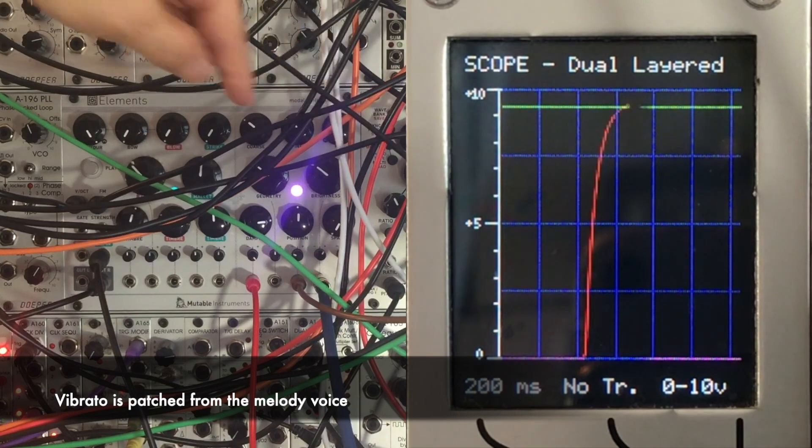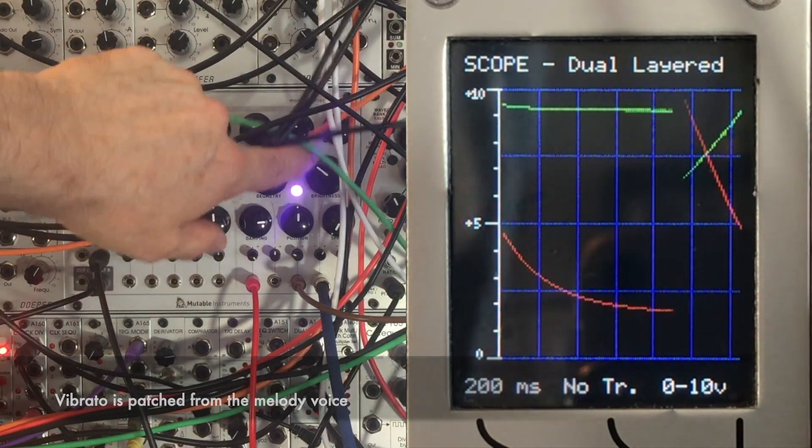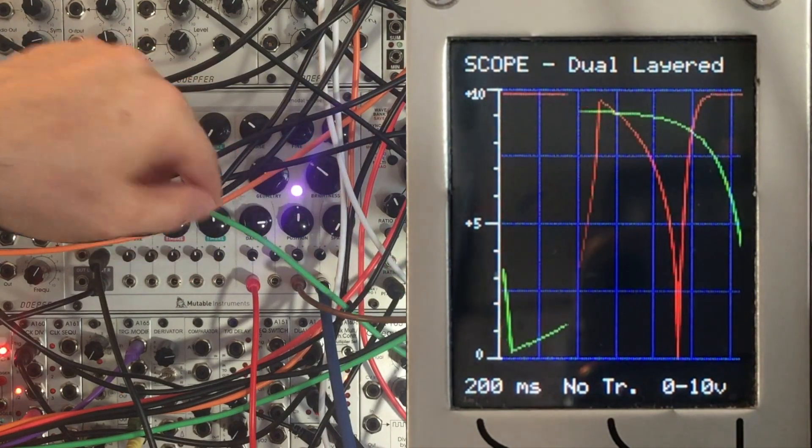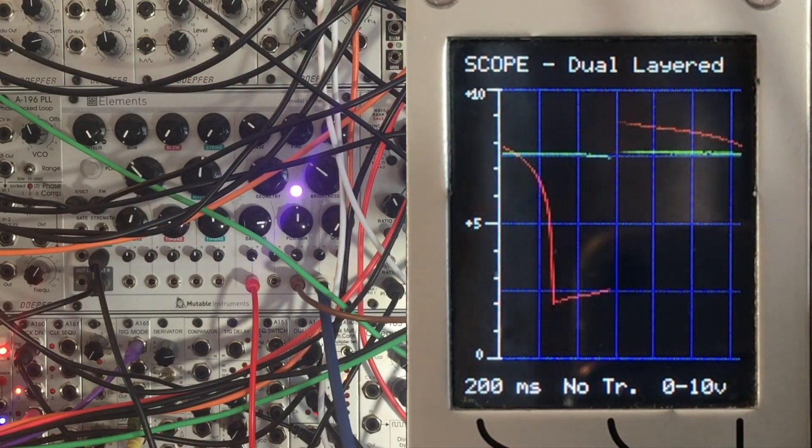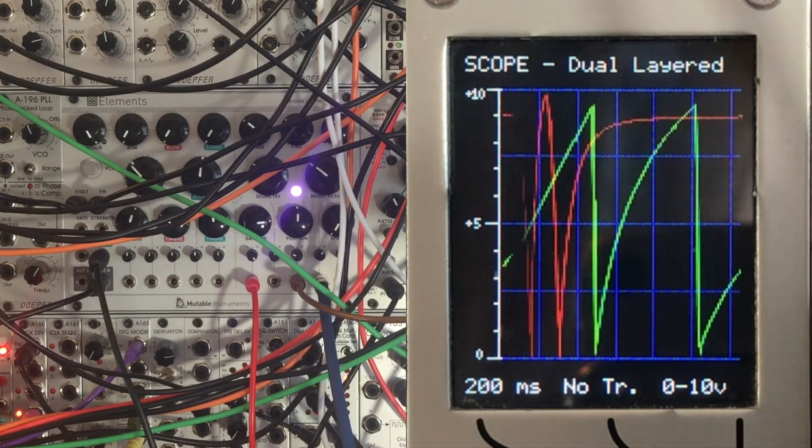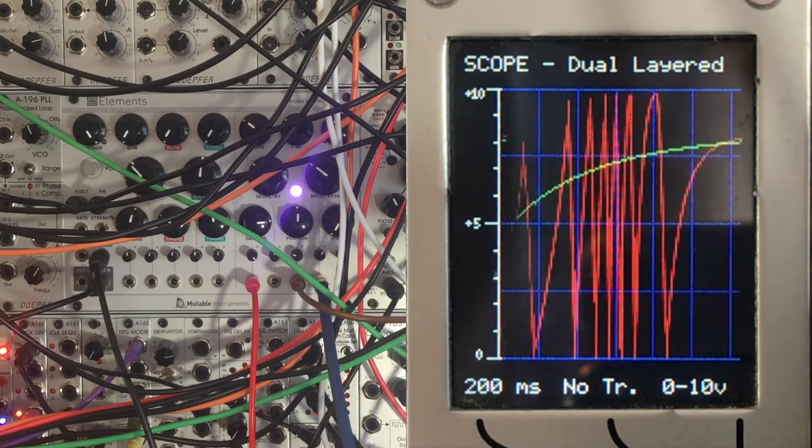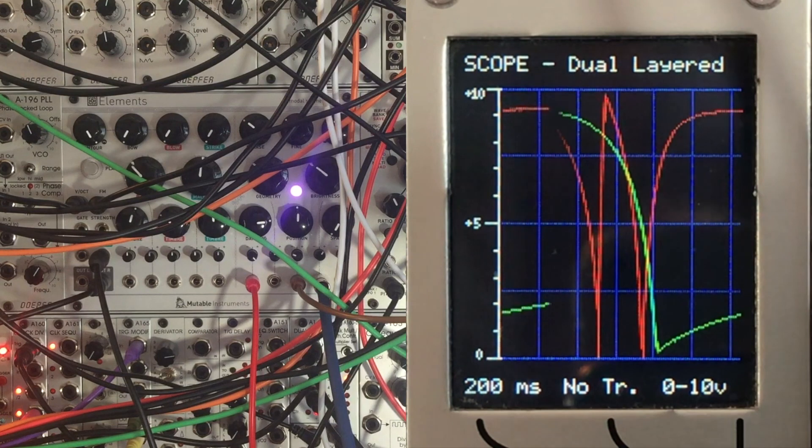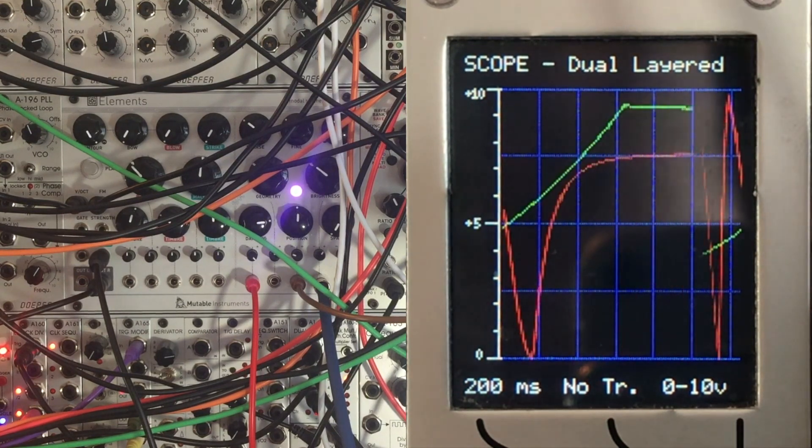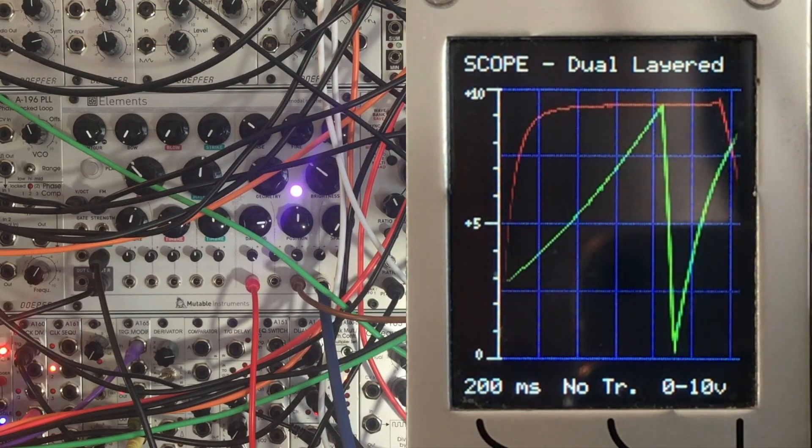And that is coming into our FM input and that's exactly the same vibrato that I originally created for the melody voice. It is coming from one of the envelopes from the Double Andore and that LFO from the Hertz Donut is the same sine wave that I'm using to create vibrato for the melody part.